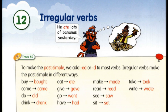Ми вивчали з вами, що у минулому часі, past simple – це минулий час, до дієслів додається закінчення -ed. Але є певна група дієслів, до яких не додається закінчення -ed. Такі дієслова називаються irregular verbs – неправильні дієслова. Як же утворюється минулий час цих дієслів? Вони повністю змінюють форму.